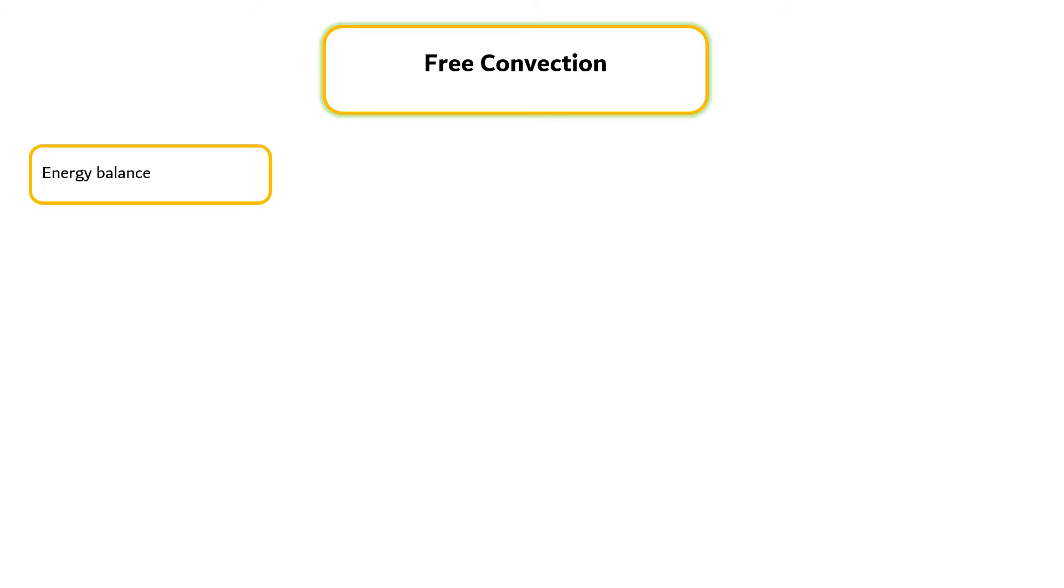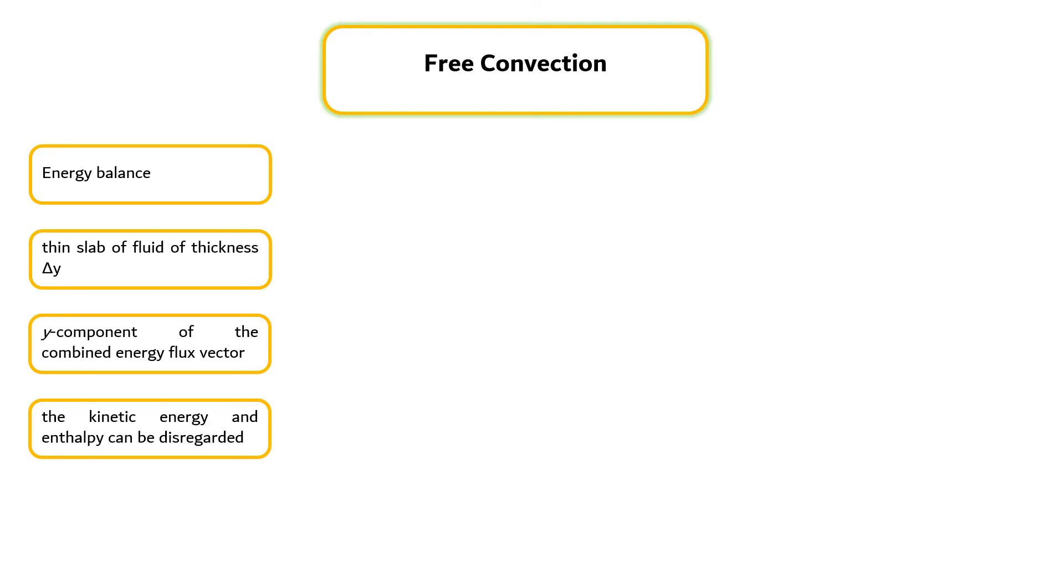An energy balance can be made over a thin slab of fluid thickness delta Y using the Y components of the combined energy flux vector. The term containing the kinetic energy and enthalpy can be disregarded since the Y component of the velocity vector is zero.